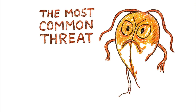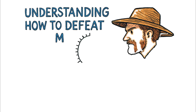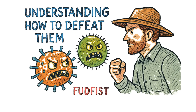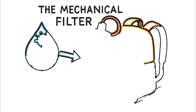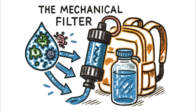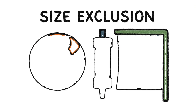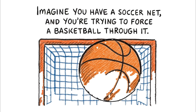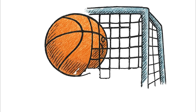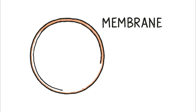They're the most common threat, the frontline enemy you will almost certainly encounter when you source water from the wild. Understanding how to defeat them is the first fundamental step to survival. The most common tool in a modern survivor's pack is the mechanical filter. Brands like Sawyer and LifeStraw have become ubiquitous and for good reason. They work on a very simple, very effective principle: size exclusion. Imagine you have a soccer net and you're trying to force a basketball through it.